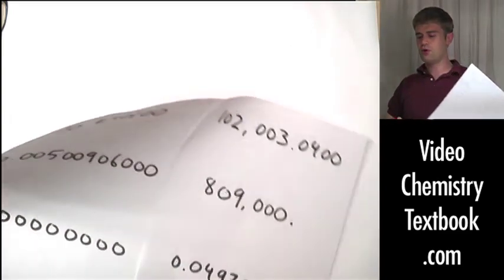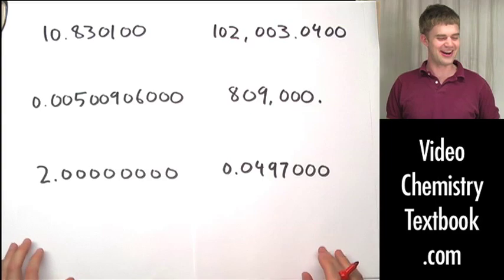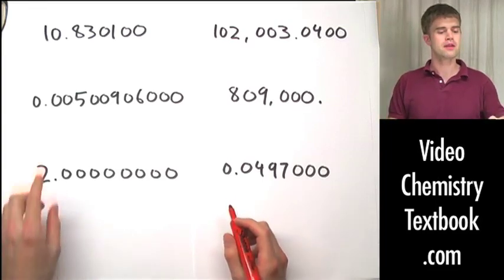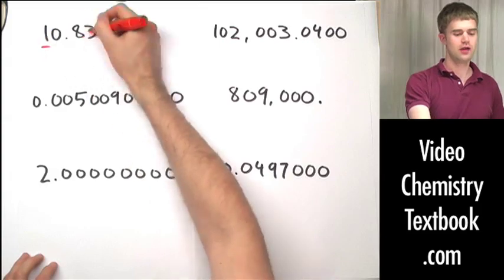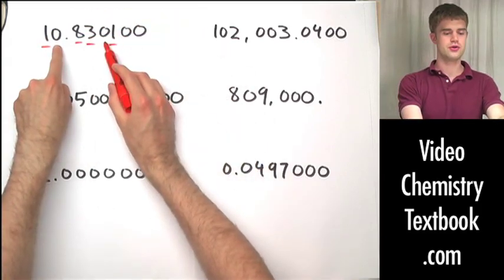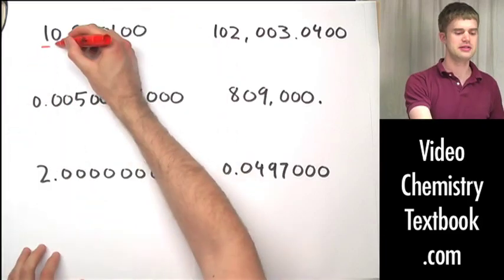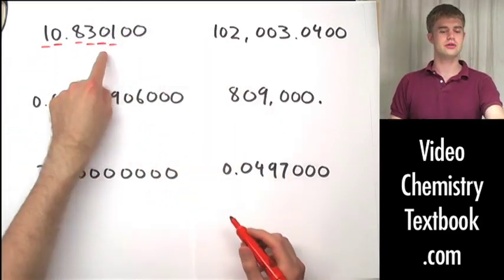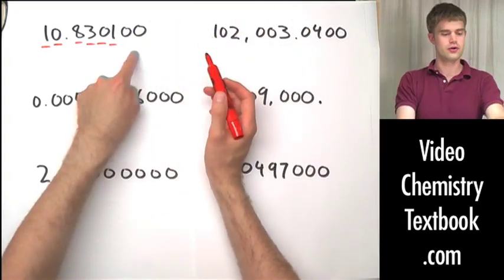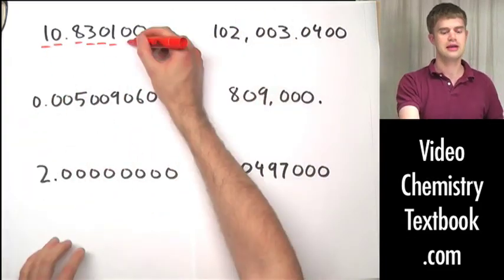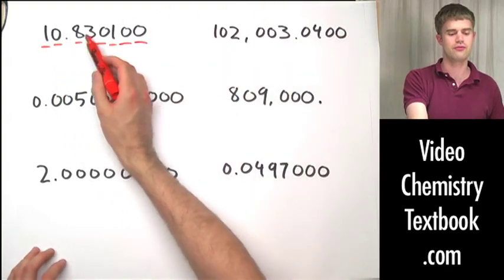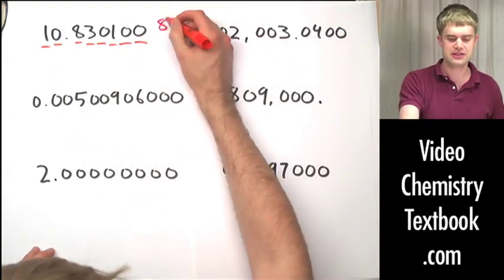Let's do just a few more — turn this off if you've already got it. This number has non-zero digits that are all significant, and two places where zeros are sandwiched between them, so both of those sandwiched zeros are significant. The zeros to the right — is there a decimal point? Yes, there is, so every single one is significant. Eight total significant figures.